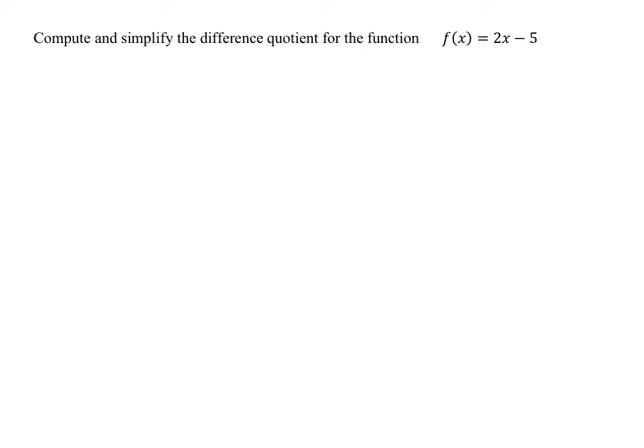In this video we want to compute and simplify the difference quotient for the function f of x equals 2x minus 5. Let's begin by writing down what the difference quotient is. The difference quotient is the quantity f of x plus h minus f of x, all divided by h.